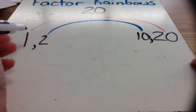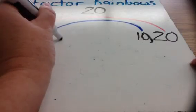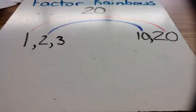Now I go back to my left side, and I do my counting numbers. 1, 2, 3. And I think to myself, is there anything times 3 that equals 20?